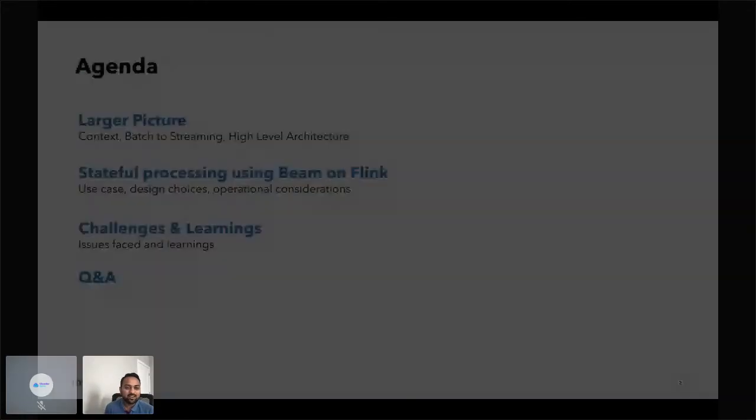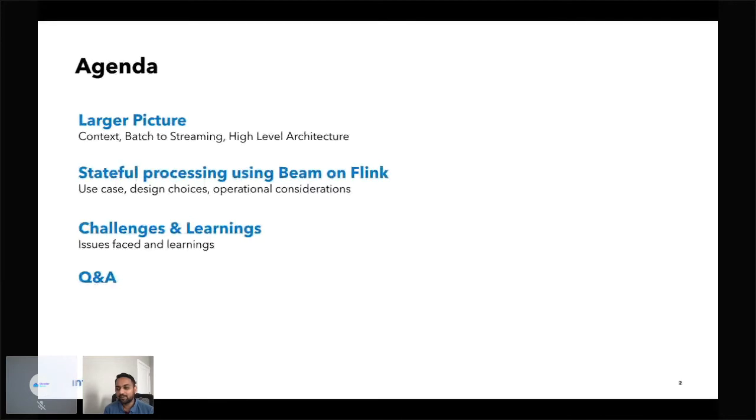We'll start with the agenda. First, I'll give a little bit of context of the problem space that we are trying to solve, how we moved from batch to streaming and why, and high-level architecture. Then we'll dive deeper into the use case, the stateful use case that we tried and implemented using Apache Beam with Flink runner, some of the design choices we made and operational considerations, and then we'll close with challenges and learnings, and finally Q&A.